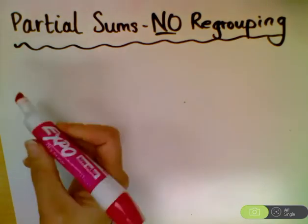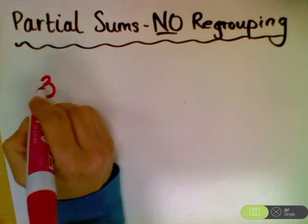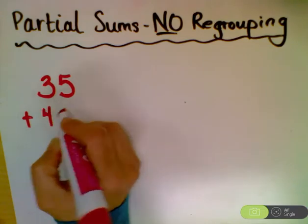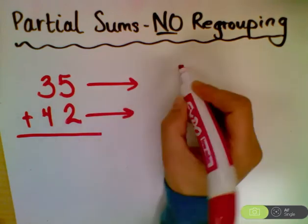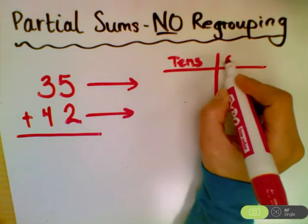And so we're going to start out with a double digit number. Let's just say we'll do 35 plus 42. And we do our two arrows, and then we make our t-chart that has the tens and the ones.